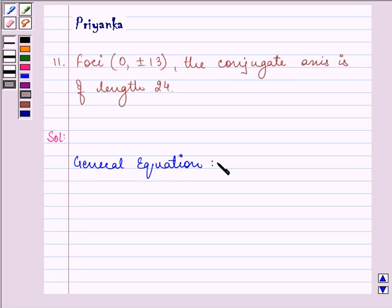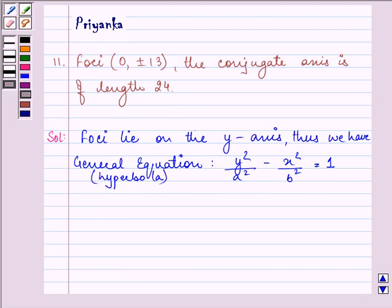of the hyperbola as y²/a² - x²/b² = 1. This is because the foci lie on the y-axis.